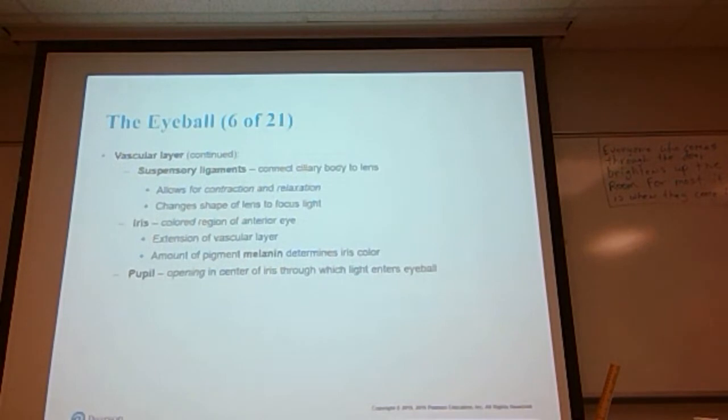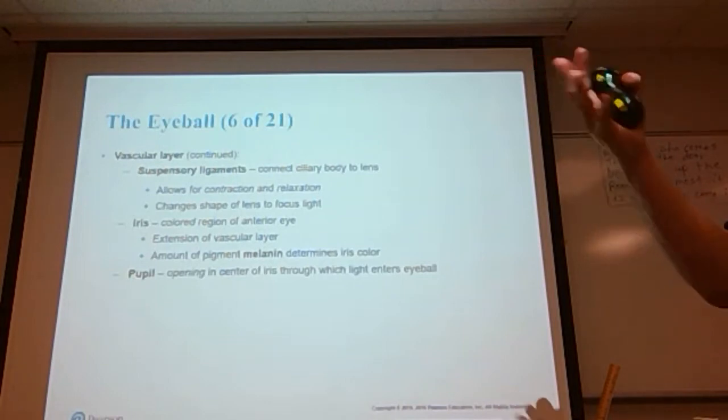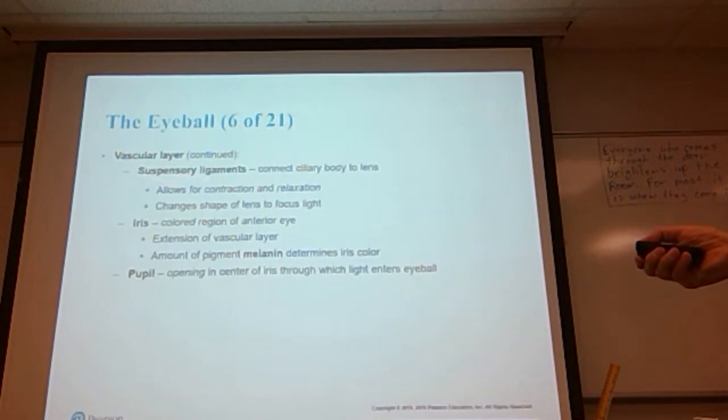The vascular layer continued: we have suspensory ligaments which connect the ciliary body to the lens. These ligaments allow for contraction and relaxation which changes the shape of the lens to focus light. Those of you who don't have to wear glasses and have really good eyes—when you're reading a book, your lens has one shape. When you're watching television, your lens has a different shape. And when you're driving and looking off into the distance, it has still another shape. All of those changes in shape are brought about by the suspensory ligaments.